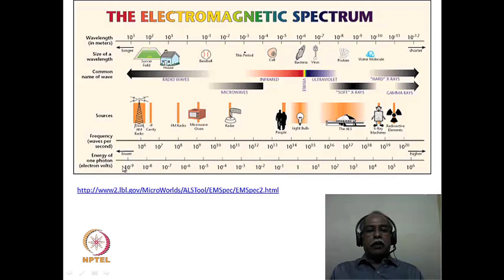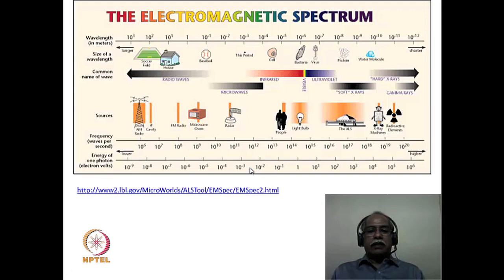For example, radio frequency photons have energy of about 10 to the power minus 9 electron volts — a nano electron volt — very low energy. Gamma rays, on the other hand, have about 10 to the power 6 electron volts — 1 mega electron volt — which is high energy ionizing radiation, capable of ionizing substances they pass through. Depending on the radiation used, different processes take place in atoms and molecules, and the response of atoms and molecules across frequency regions is what is recorded as a spectrum.